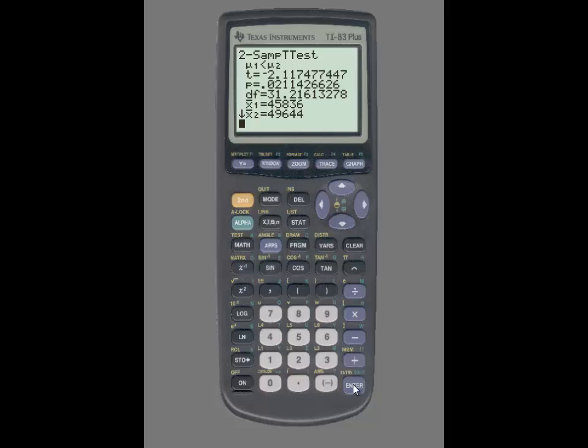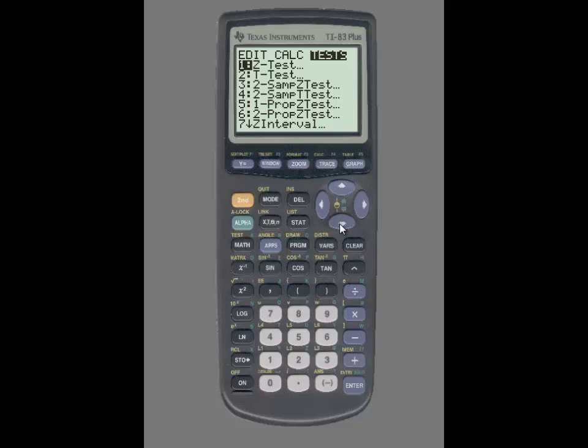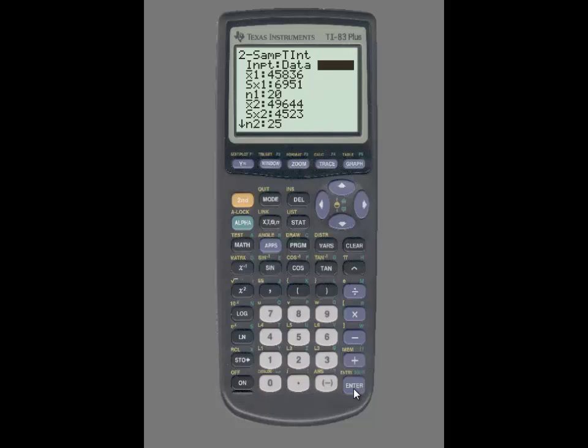Now, we are going to use the two-sample t-interval function on the calculator to construct a confidence interval. So, once again we are going to press STAT, use the right arrow key to highlight TESTS and scroll down until you see two-sample t-interval. On this screen you will notice that the summary statistics are already there and that is because the calculator will transfer the information over. So, you do not have to re-enter the information if you have already entered it for a previous example.